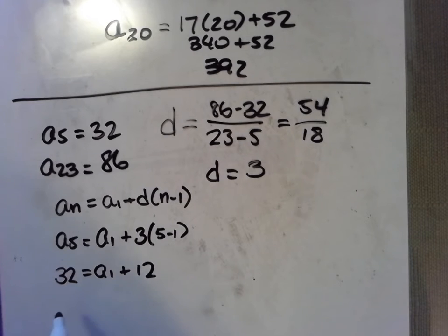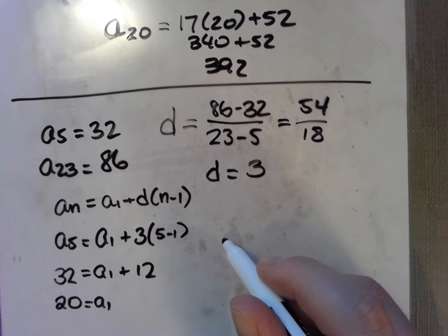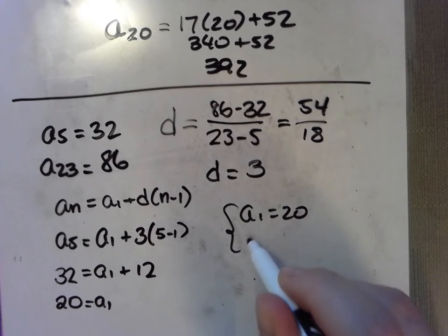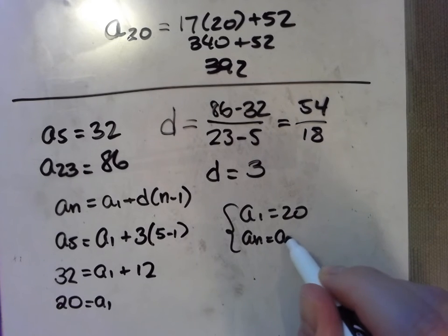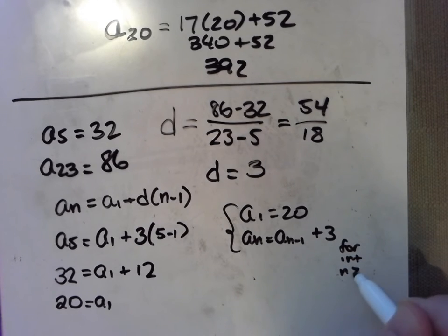To subtract 12 from both sides, I get 20 is the value of our first term. Now we have the two pieces of information to either write an explicit or a recursive formula. I'm going to write my recursive formula, might be quicker. a sub 1 equals 20, a sub n equals the previous term plus 3, for integers n greater than or equal to 2.